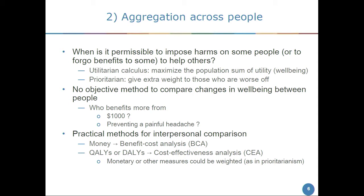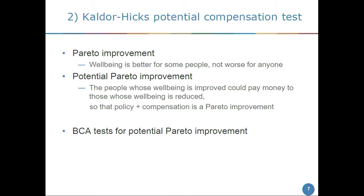In benefit-cost analysis, the fundamental idea is the Kaldor-Hicks compensation test. First, the idea of Pareto improvement: a change that improves the well-being of some people and does not reduce the well-being of anybody is Pareto superior — largely unobjectionable. The idea of potential Pareto improvement is: if we have a change and then imagine redistribution of money in the population, can we convert that change into a Pareto improvement hypothetically? That's what BCA is testing for.